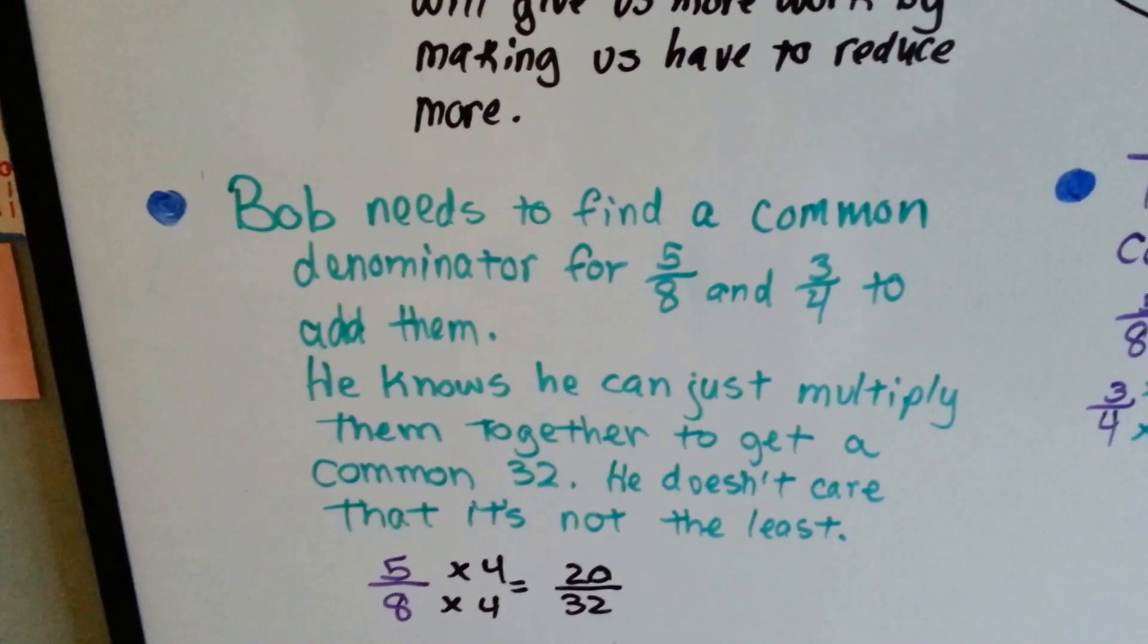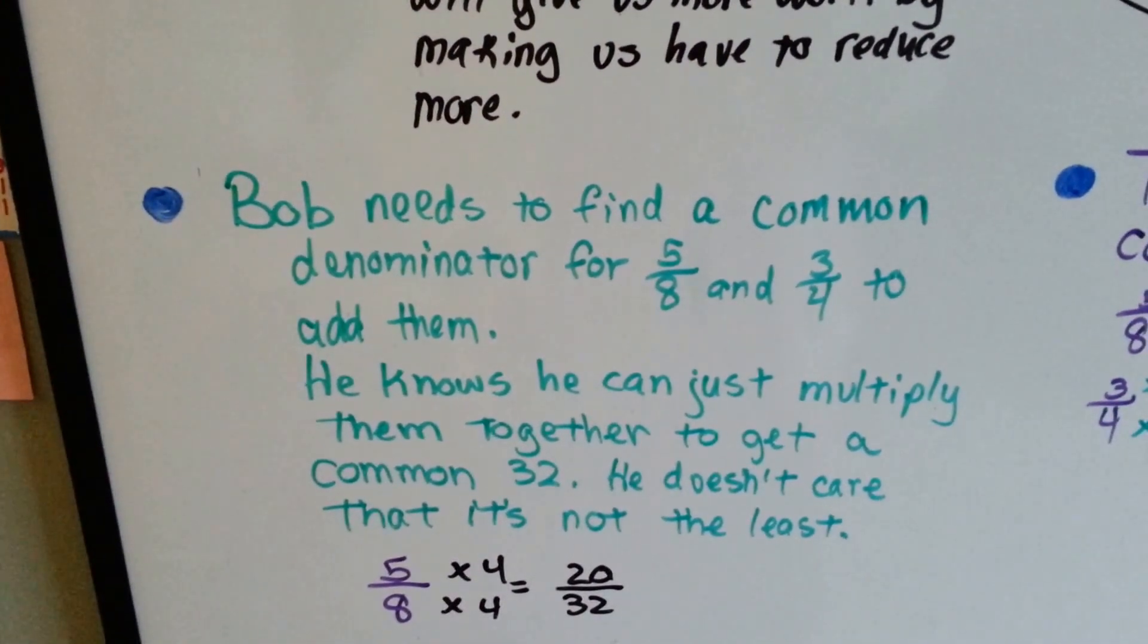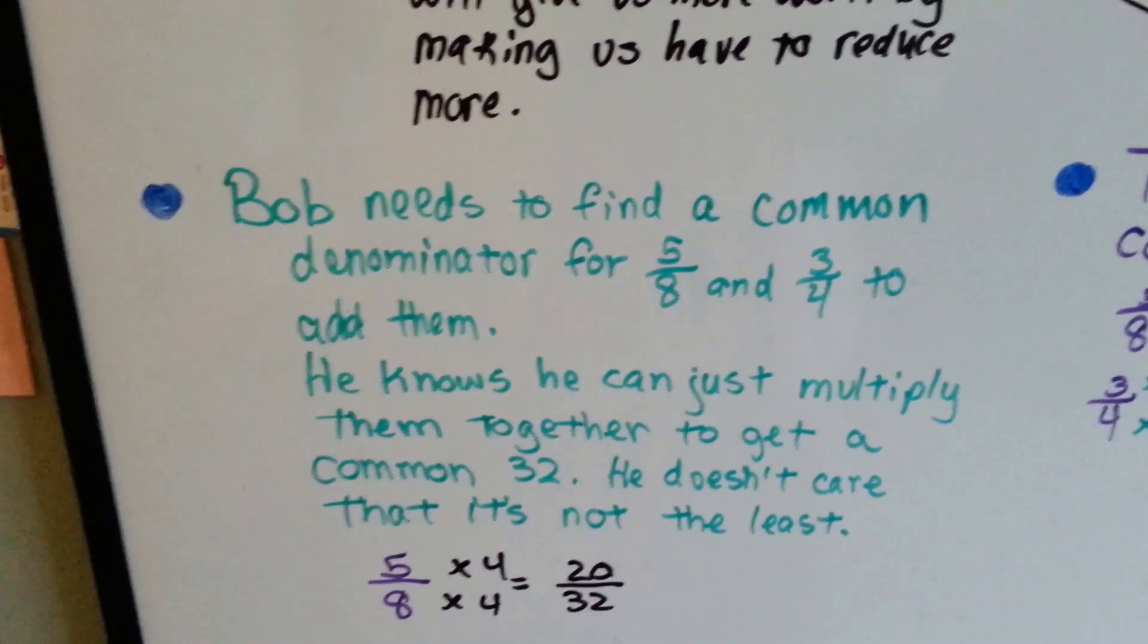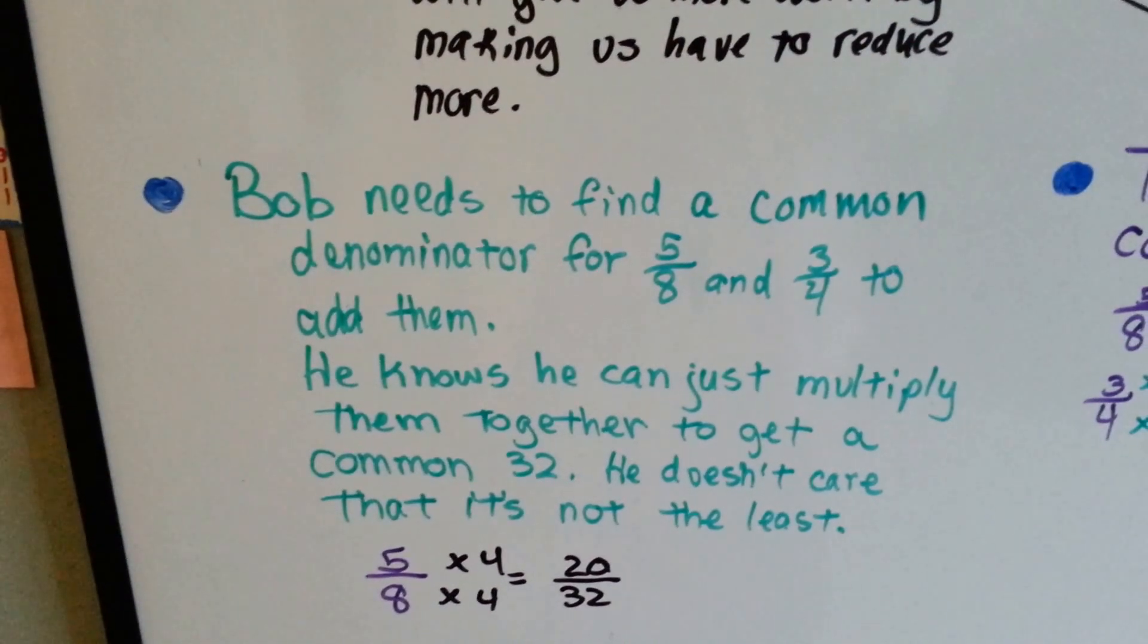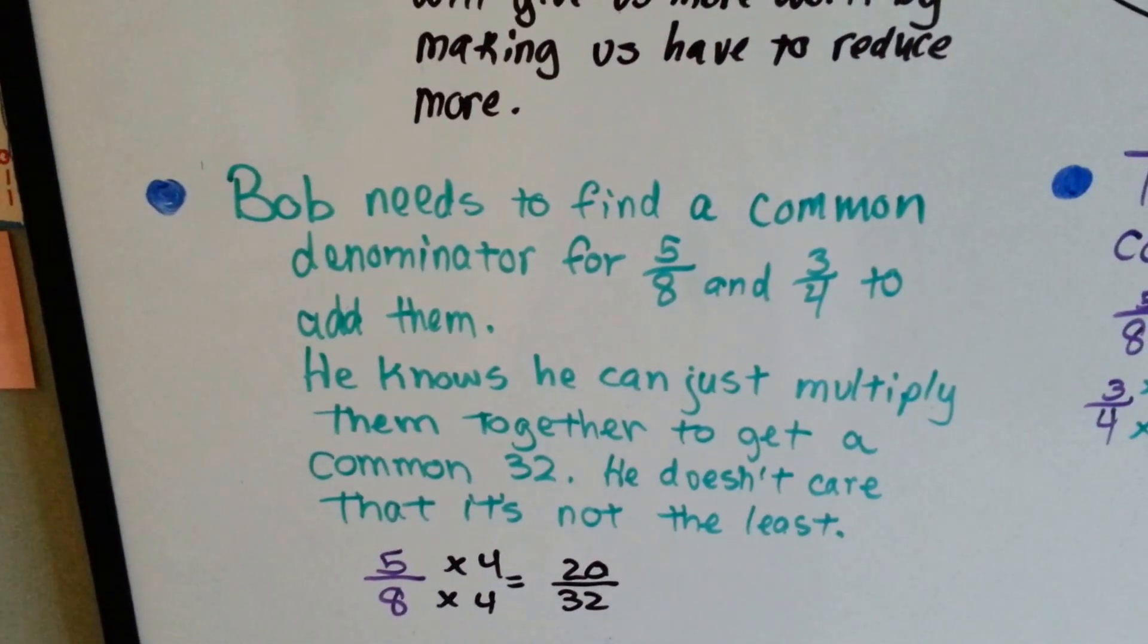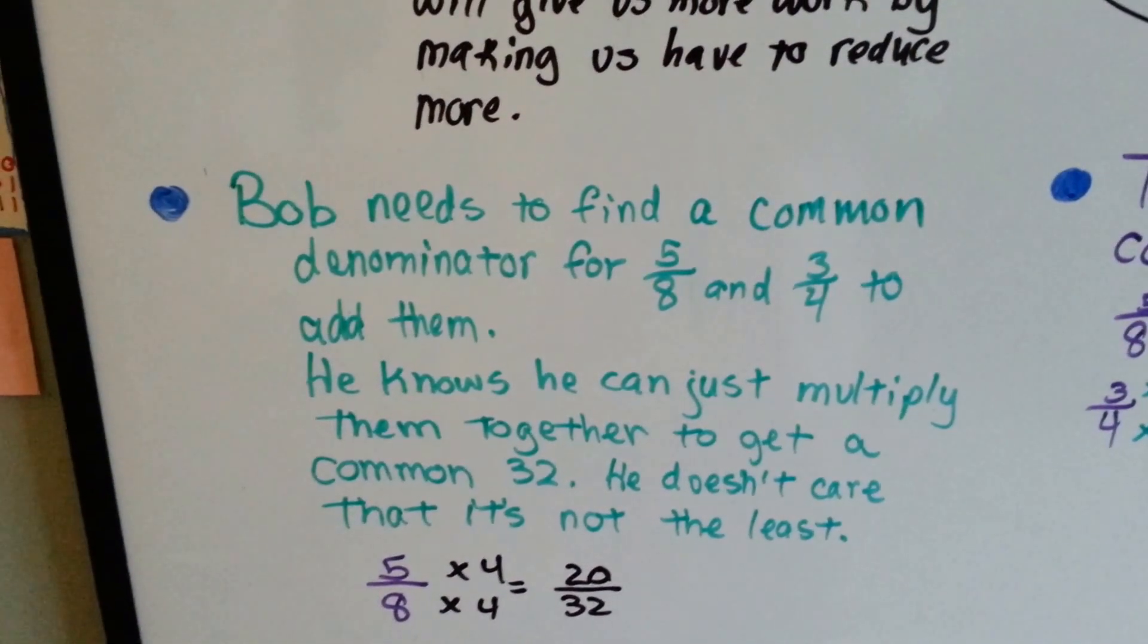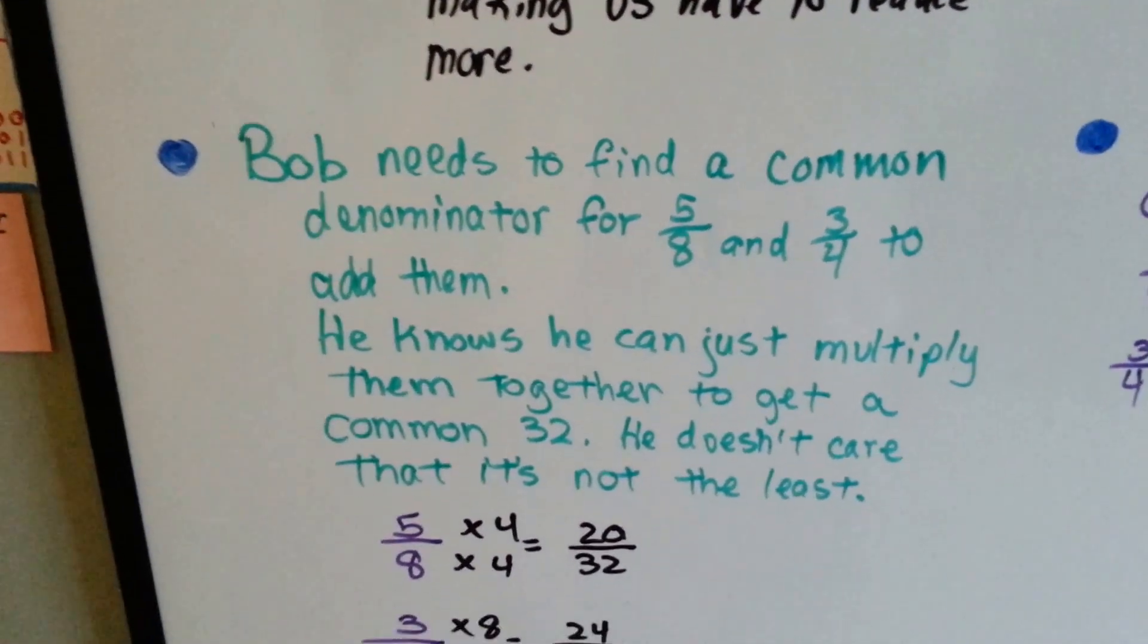Bob needs to find a common denominator for 5/8 and 3/4 to add them. He knows he can just multiply them together to get a common 32. He doesn't care that it's not the least, it's the quickest. Just multiply them, right? That's what everyone says.